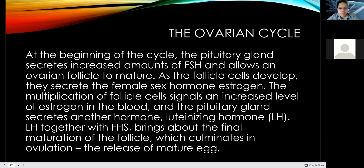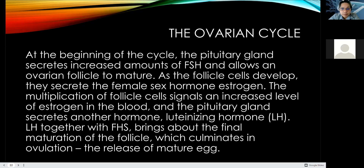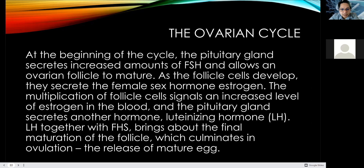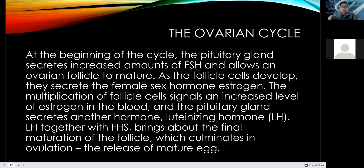The ovarian cycle: at the beginning of the cycle, the pituitary gland secretes an increased amount of follicle-stimulating hormone — FSH — and allows an ovarian follicle to mature. As the follicle cells develop, they secrete the female sex hormone estrogen. The multiplication of follicle cells signals an increased level of estrogen in the blood, and the pituitary gland secretes another hormone — the luteinizing hormone — together with FSH, bringing about the final maturation of the follicle, which culminates in ovulation and releases the mature egg.